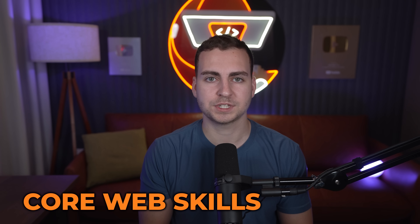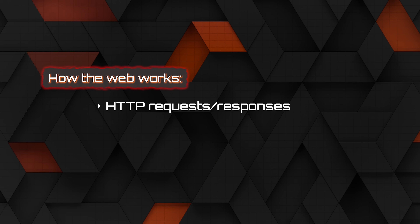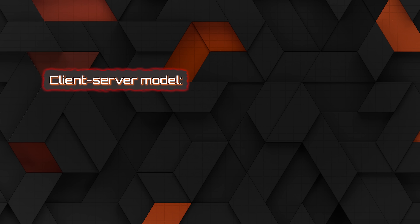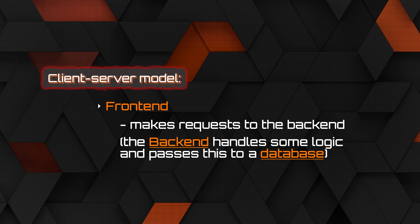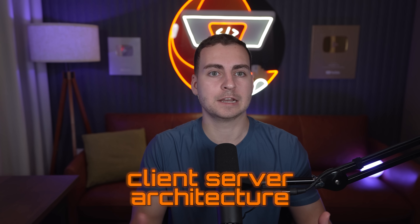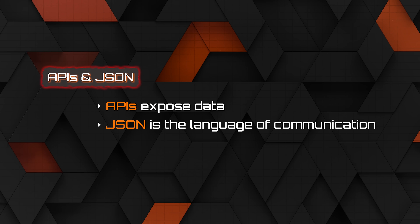On your journey to become a full stack developer, there are core web development concepts you'll need to understand regardless of which stack you use. First is how the web works: HTTP requests, responses, and status codes. Next is the client-server model — the front end makes a request to a backend, the backend handles some logic, and maybe passes this to a database. This is client-server architecture and it's a topic you need to understand. Then there are APIs and JSON: APIs expose data, JSON is the main language of communication, and you need to understand these concepts.